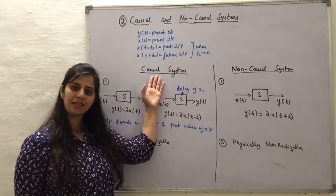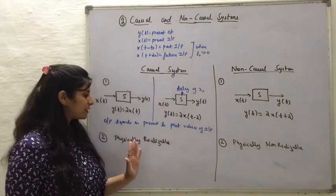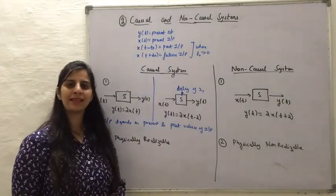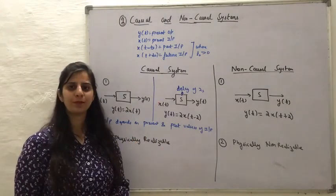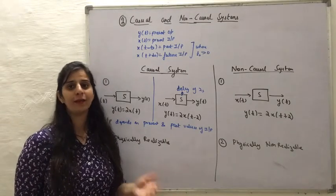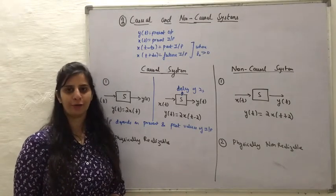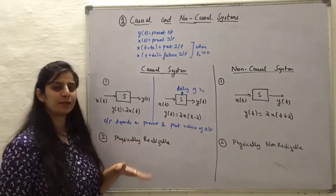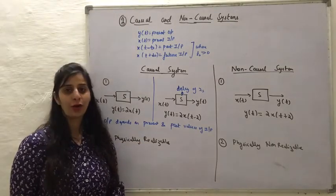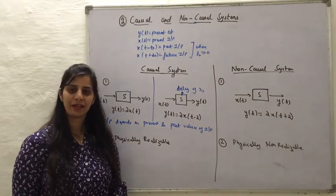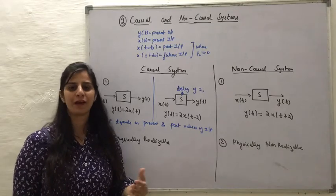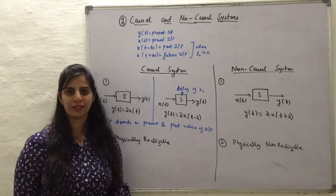Causal systems are physically realizable because the output depends upon the past or present value of the input. These systems are also called non-anticipatory systems because they do not have to predict any future value of the input signal.